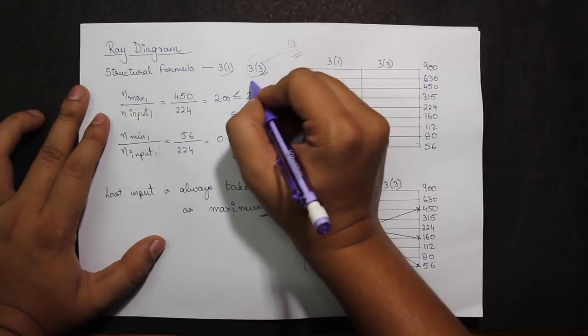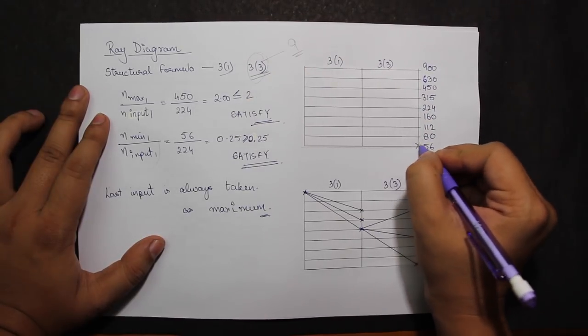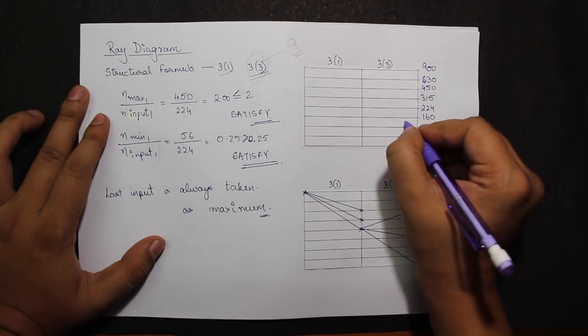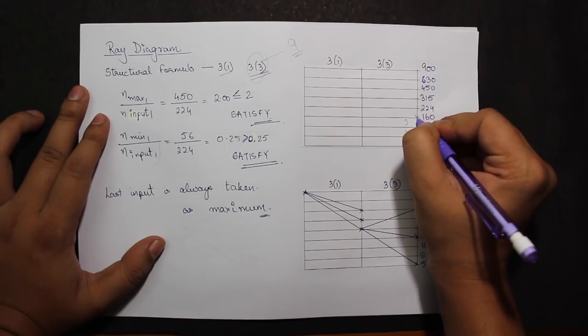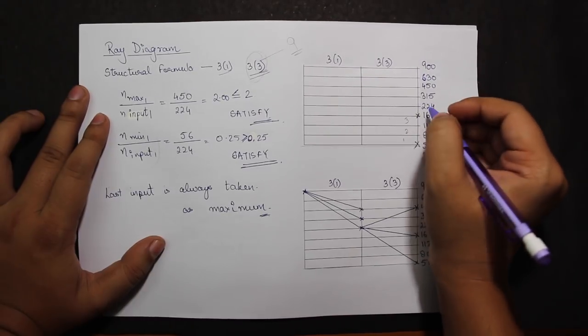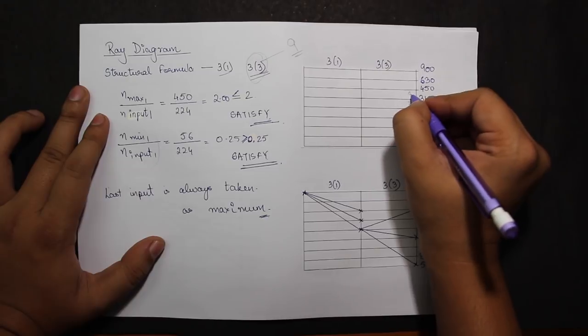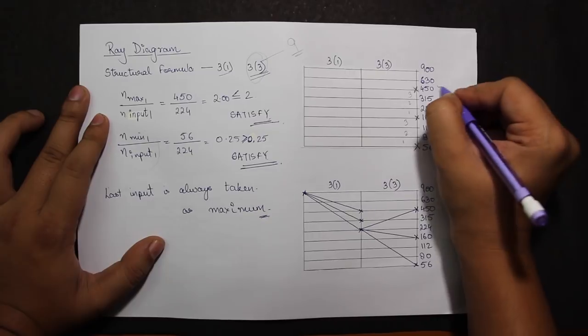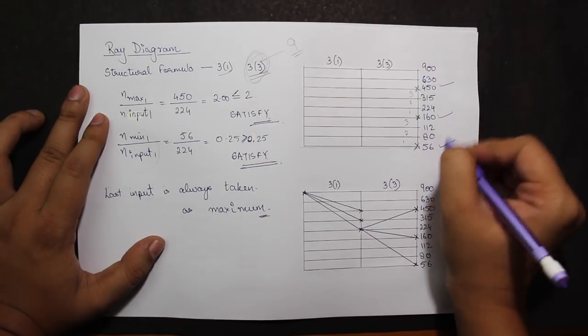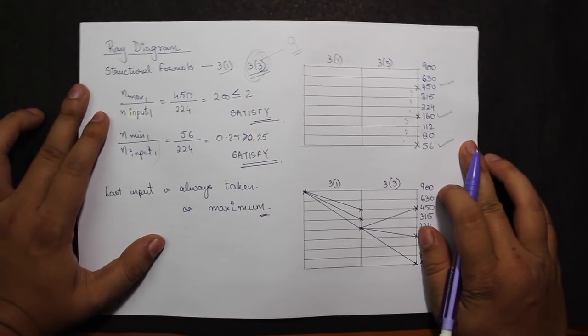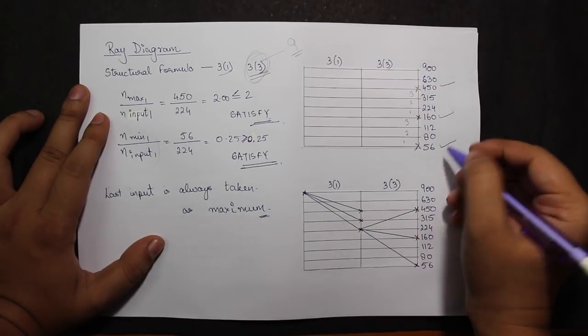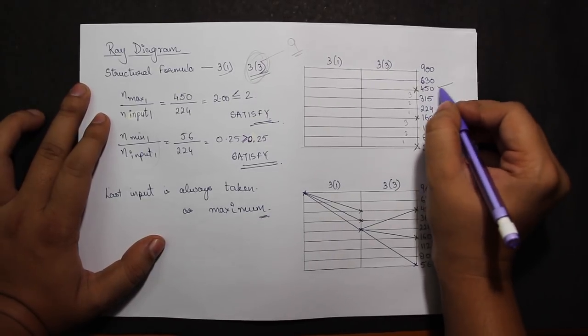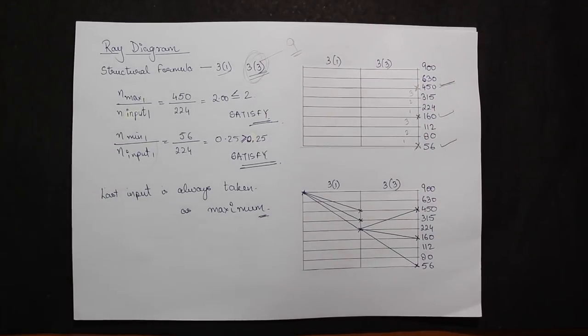Looking at the structural formula, my first speed would be 56. After skipping three intervals, I select my next speed as 160, and three intervals again I select my speed as 450. So I got three speeds from the structural formula: 56, 160, and 450. The minimum would be 56 and the maximum speed for this step would be 450.